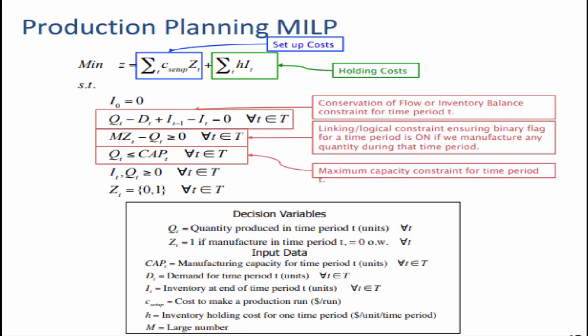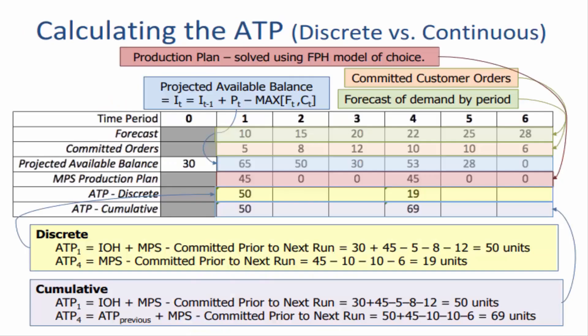You will learn how to communicate forecasts and demand for end items to manufacturing. You will also learn how to allow sales to determine availability to promise (ATP). Time fencing reduces production nervousness, covering Frozen, Slush, and Water zones.